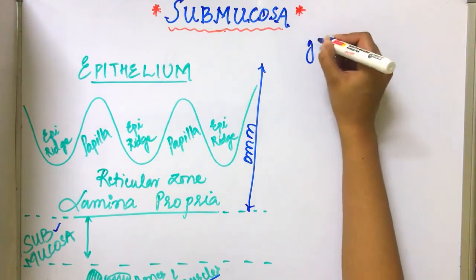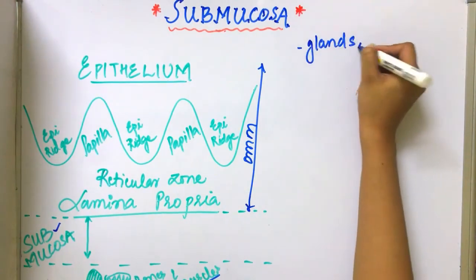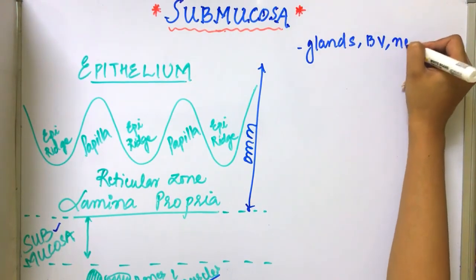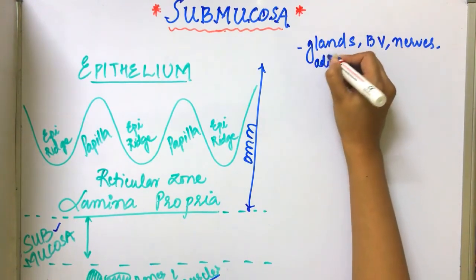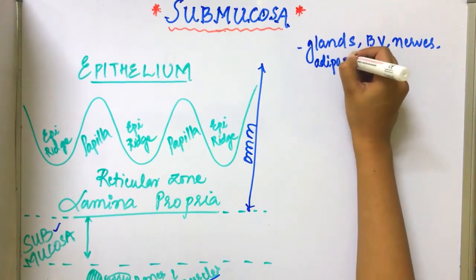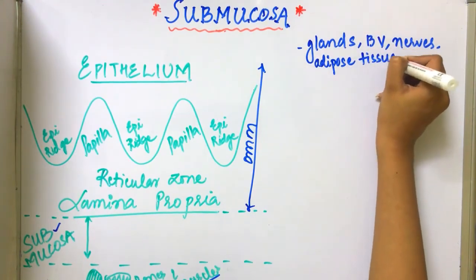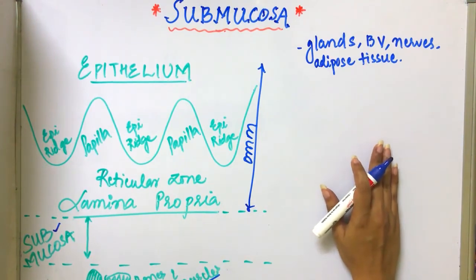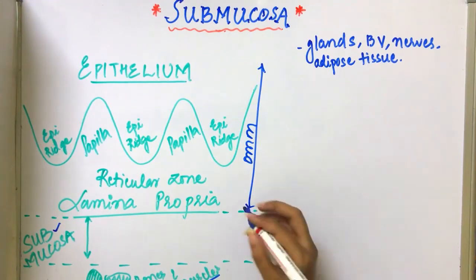Now what is the composition of the submucosa? It contains glands, blood vessels, nerves, and adipose tissue.